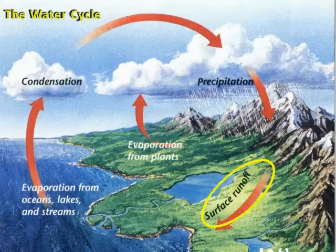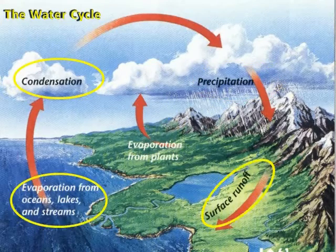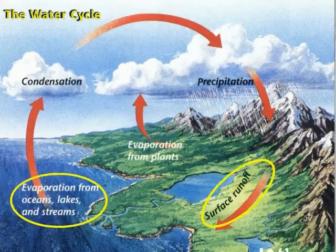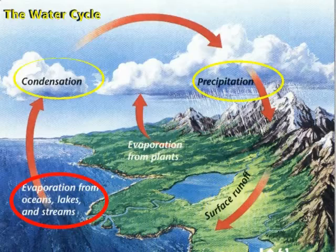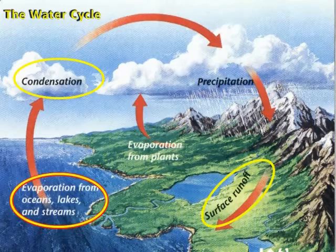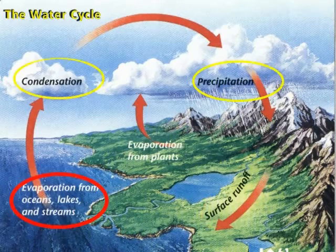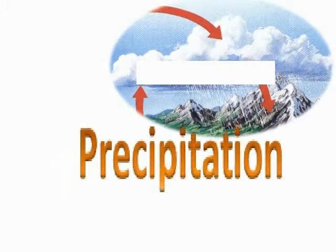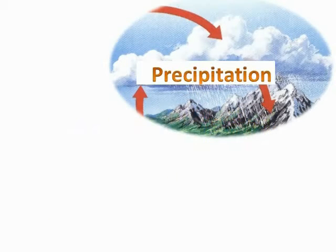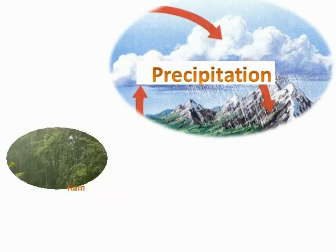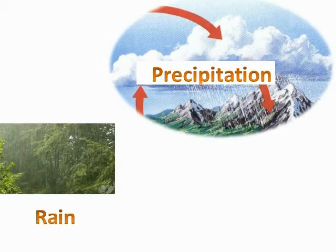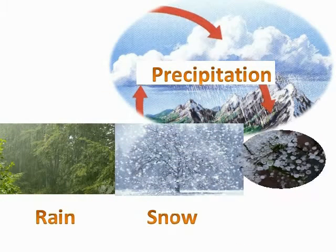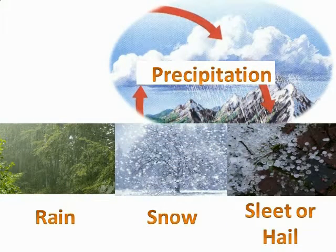We can start at any location in the cycle. The song started at evaporation, so let's start at precipitation. During precipitation, water falls to the ground in the form of rain, snow, sleet, or hail.